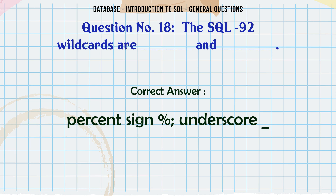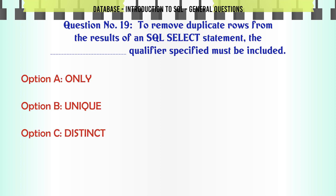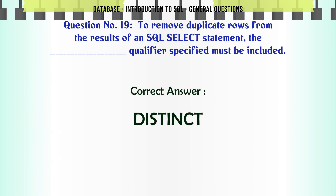To remove duplicate rows from the results of an SQL SELECT statement, the qualifier specified must be included. A. Only. B. Unique. C. Distinct. D. Single. The correct answer is: Distinct.